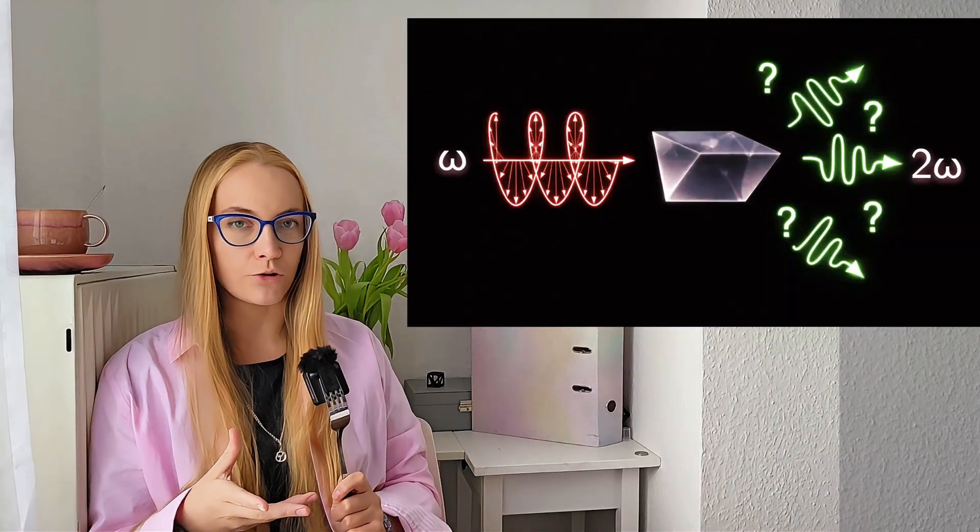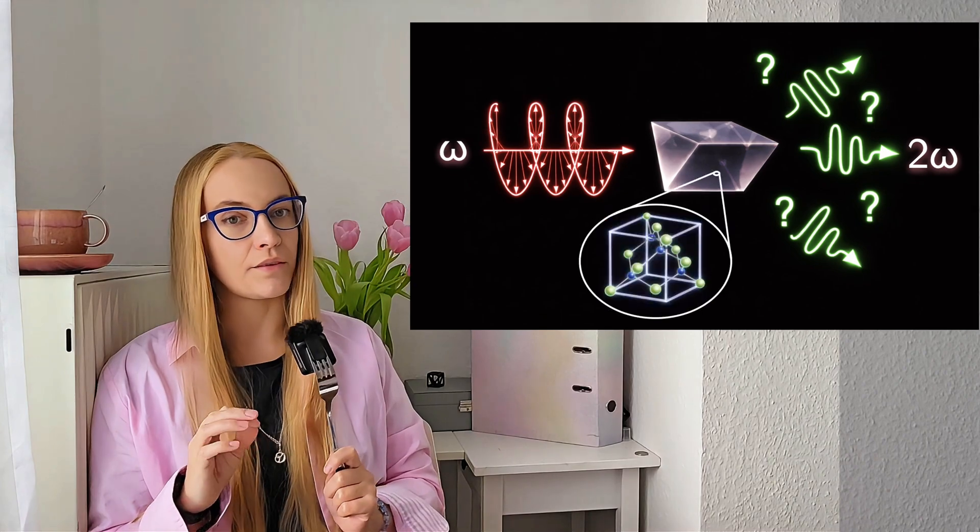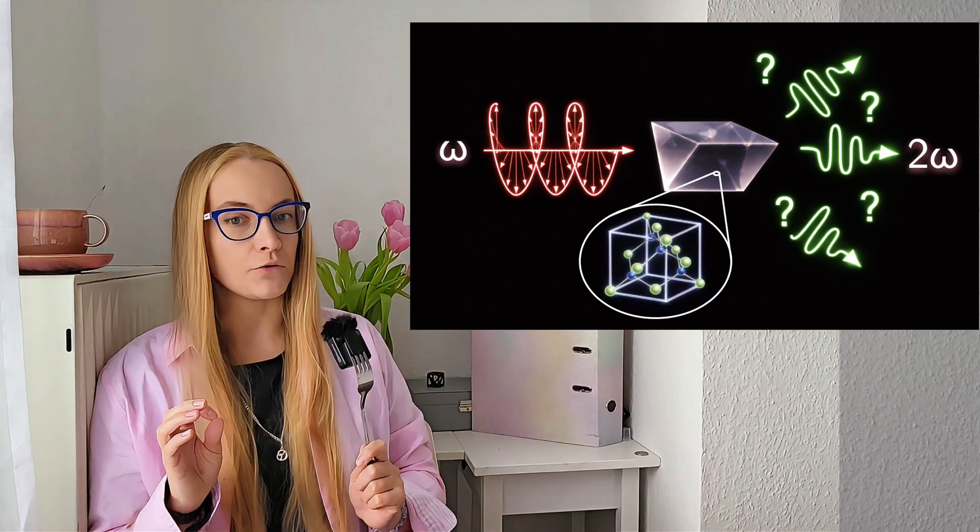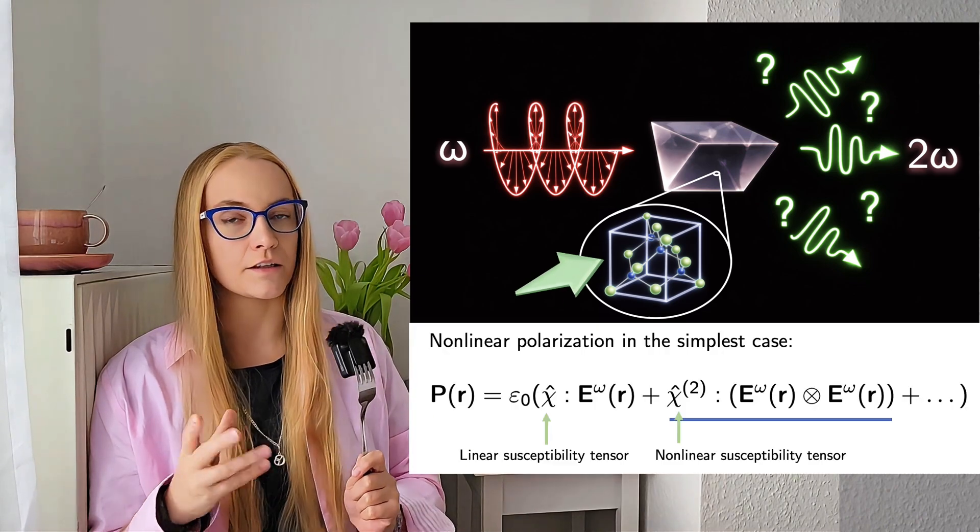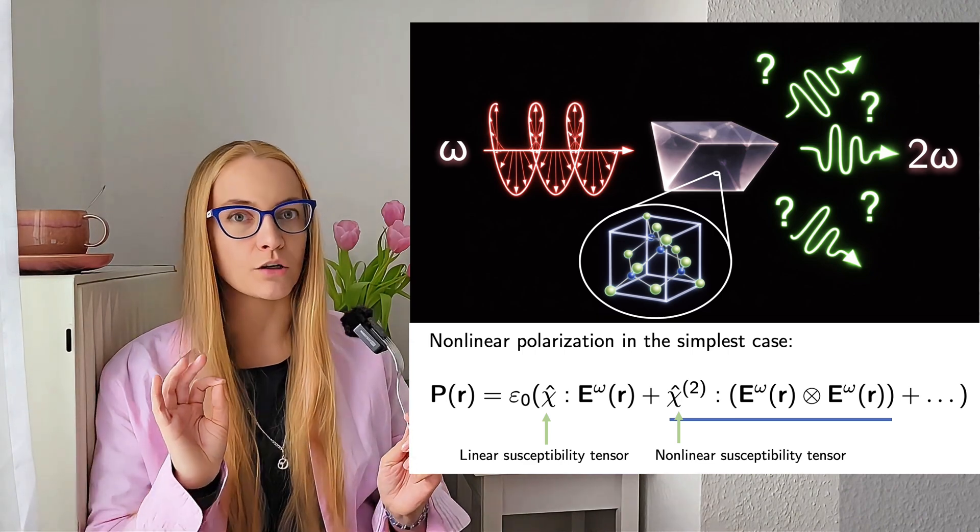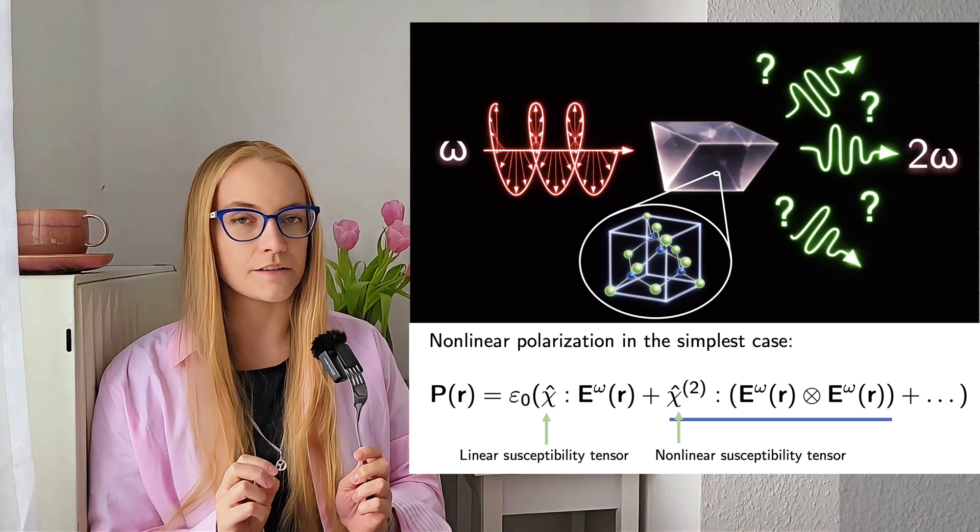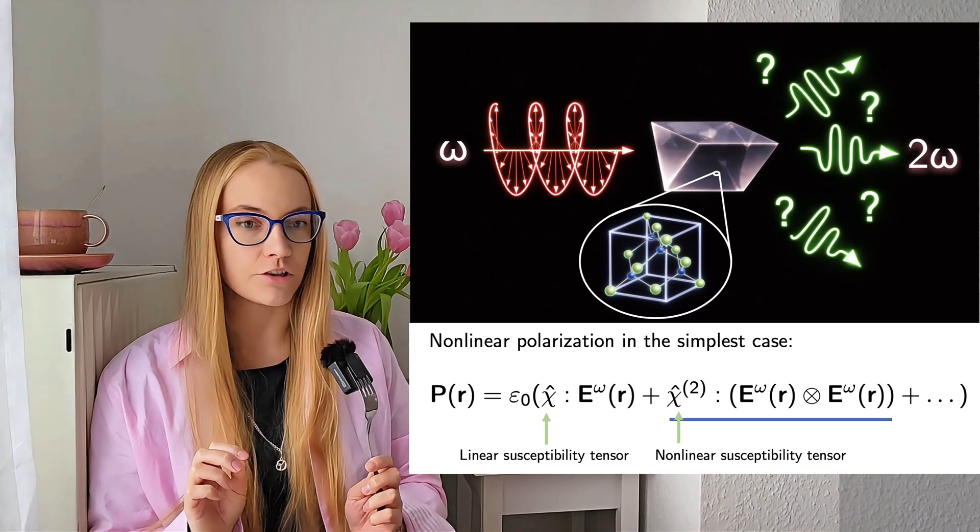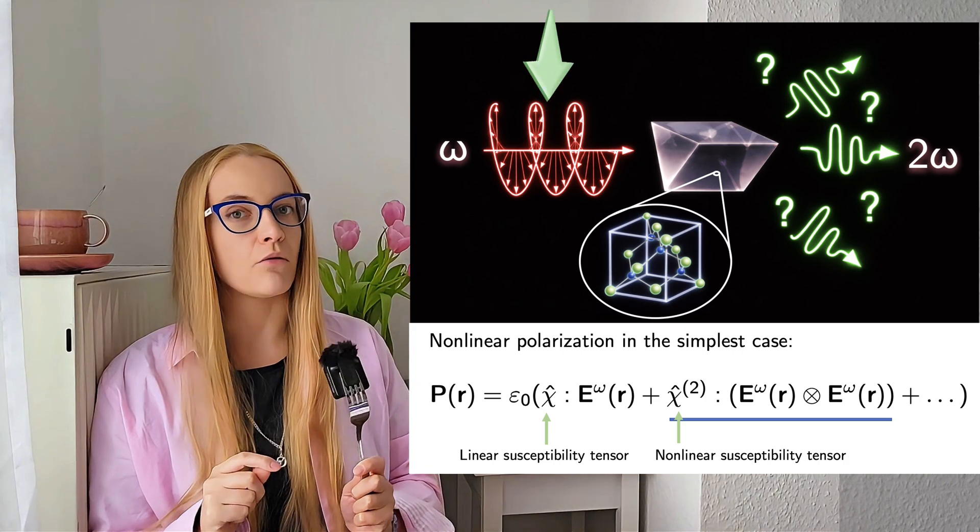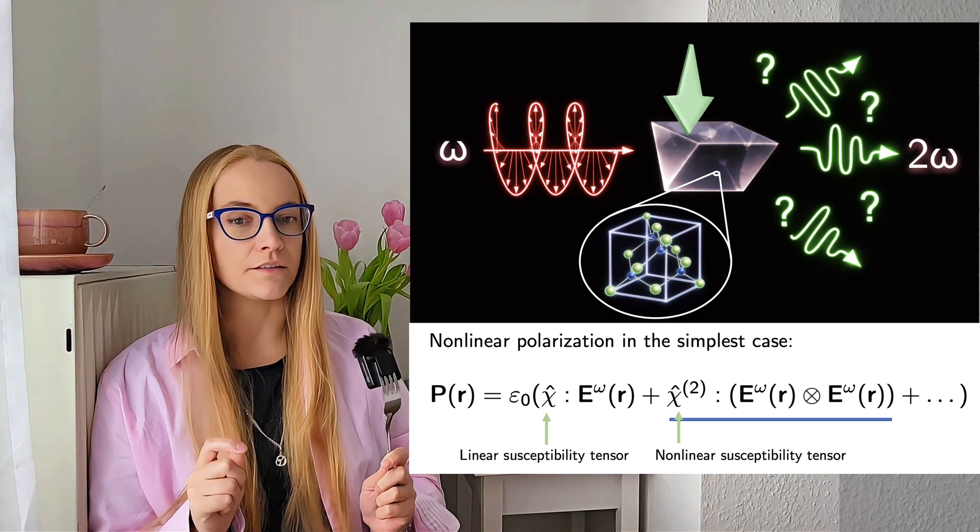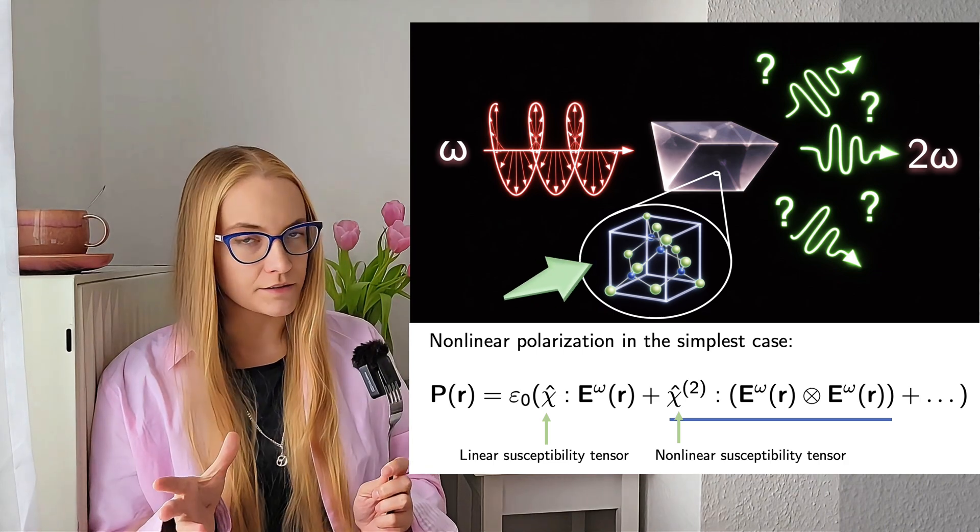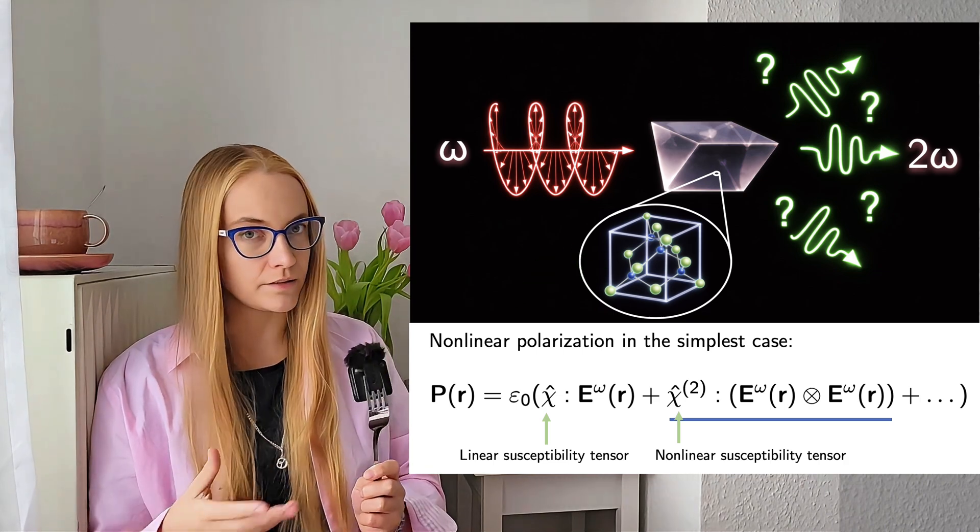The key point of my work is that the nanoparticles are made of non-centrosymmetric material, so the nonlinear response is governed by the second harmonic susceptibility tensor of this material. There is also something quite non-obvious related to the tensor, so pay attention to this part. We deal with three independent symmetries: the symmetry of the incident electromagnetic field, the geometrical symmetry of the nanostructure or metasurface, and the crystal symmetry of the material itself.